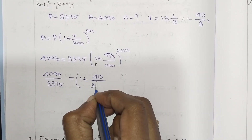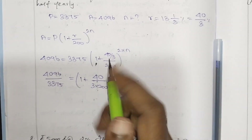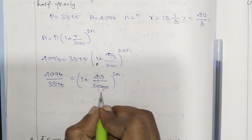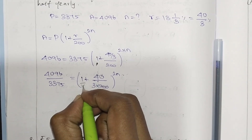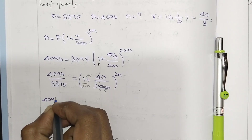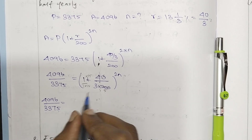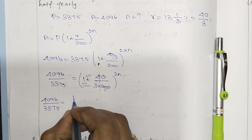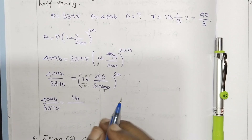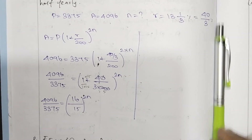Simplifying: 3 into 200 gives 600. So we have 4096 by 3375 equals 1 plus 1 by 15, whole power 2N, which is 16 by 15 whole power 2N. Then 4096 divided by 3375 equals 16 by 15 whole power 2N.